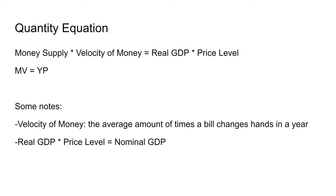Now we talk about the quantity equation, which equates money supply multiplied by the velocity of money to real GDP times the price level: MV = YP. The velocity of money is basically the average number of times a specific bill changes hands. Note that real GDP times the price level equals nominal GDP. So if you increase money supply while keeping velocity constant, you must have an increase in nominal GDP.